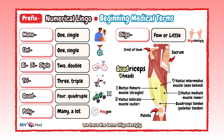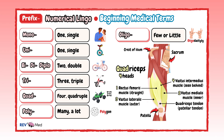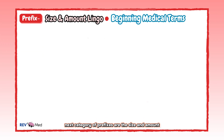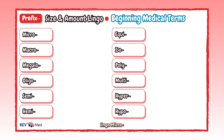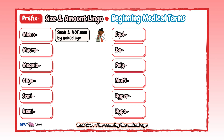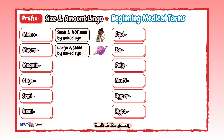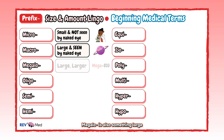Poly means many or a lot — think polygon. Oligo means few or little — for example, oligodactyly is when someone has fewer than five fingers or toes. Next, size and amount prefixes: micro is something small that can't be seen by the naked eye — you need a microscope. Macro is the opposite — something large that can be seen by the naked eye, like viewing the galaxy.